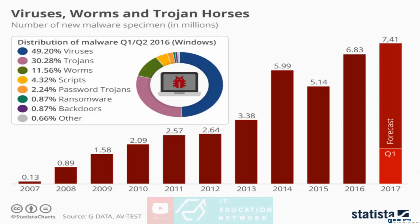Before I wrap up this quick introduction, I wanted to show you a graph from Statista that demonstrates the number of new malware specimens created every single year. The numbers are rising — from 130,000 back in 2007, to projected numbers of over 7 million new forms of malware just 10 years later. Viruses account for 9%, Trojans 30%, and worms 11%, so these three are the main forms constantly being created. Ransomware is also becoming more and more popular.